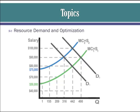Lesson 4.03 has a lot of information in it. Learn the terms on the introduction page. The things that cause a change in resource demand are productivity of the resource, prices of other resources, and derived demand. These change the MRP of labor and cause demand to increase or decrease.